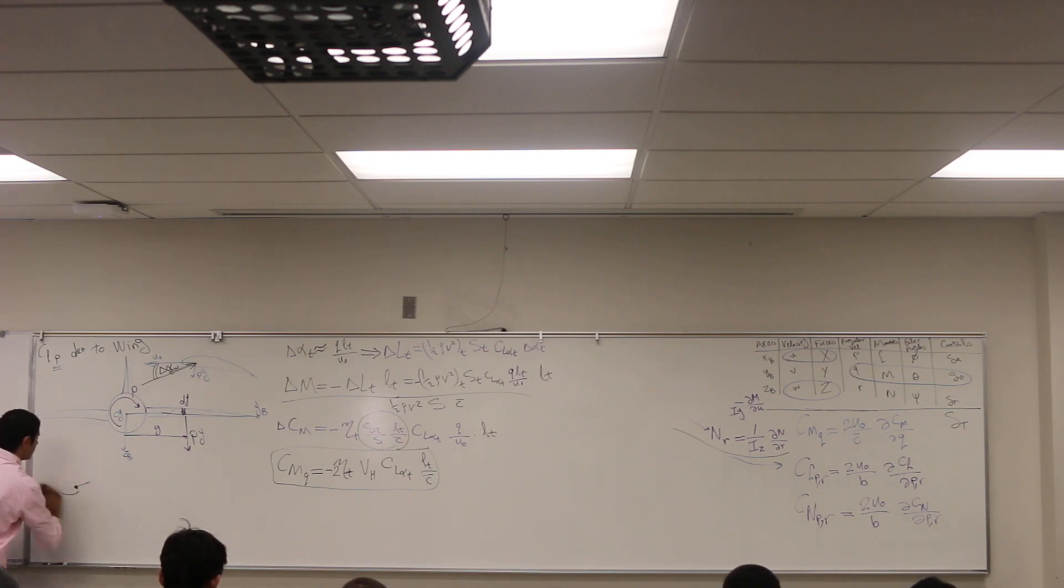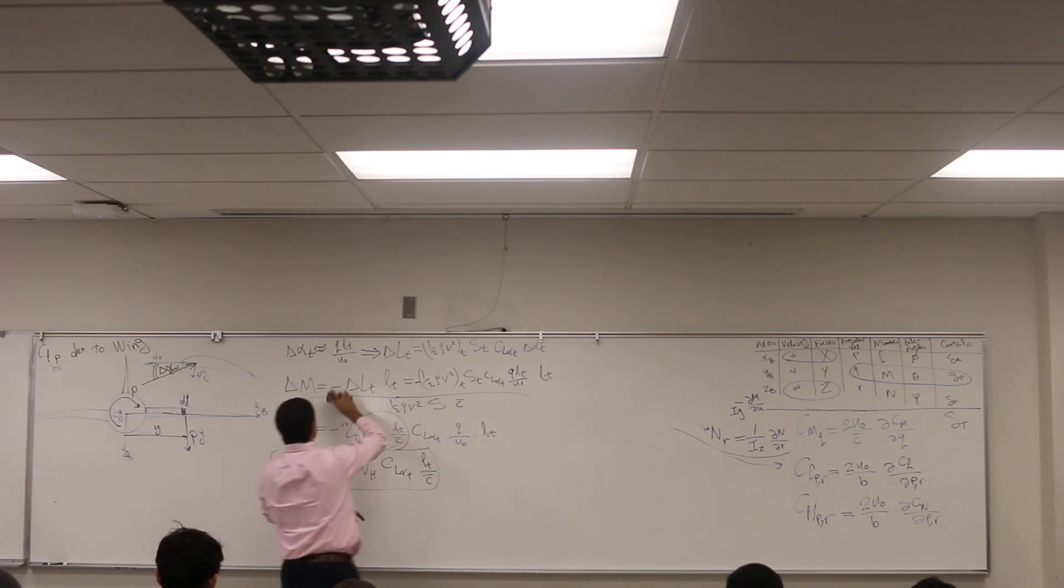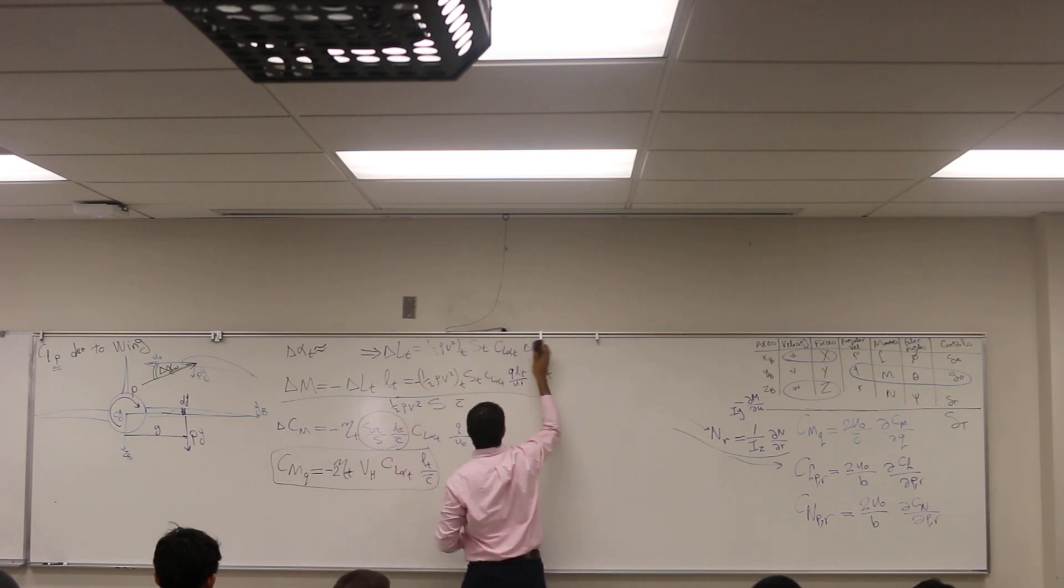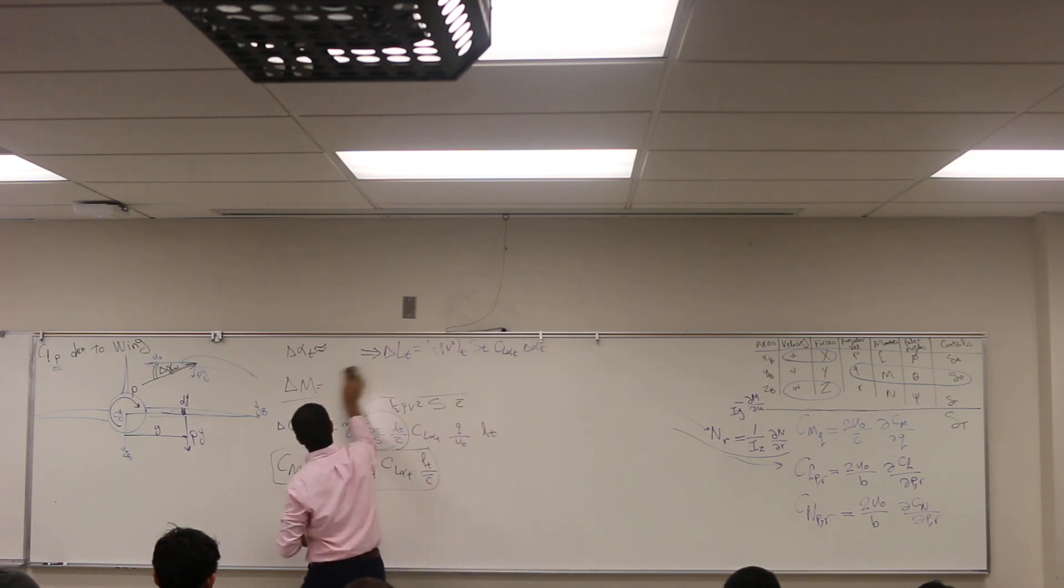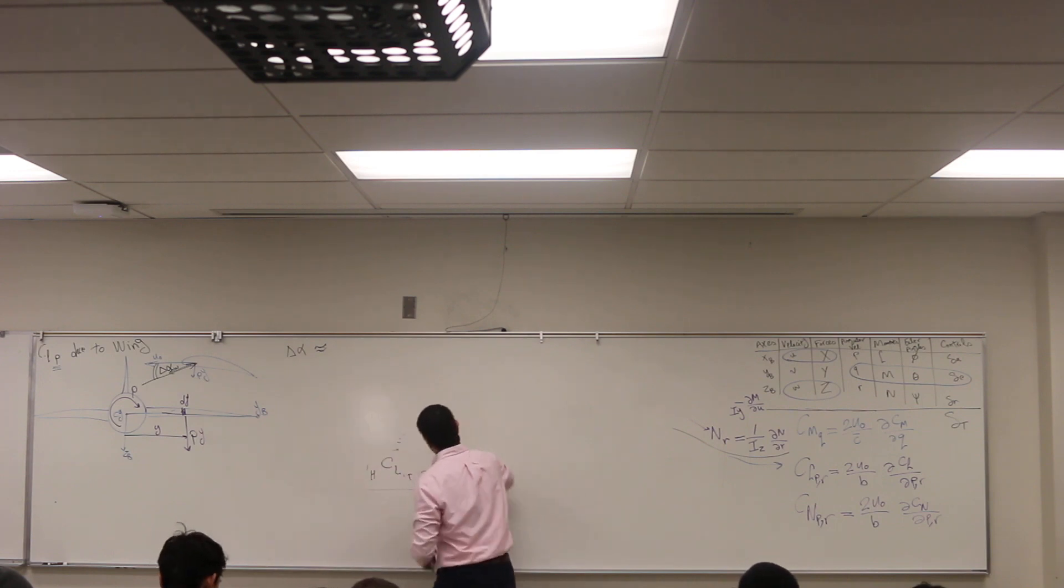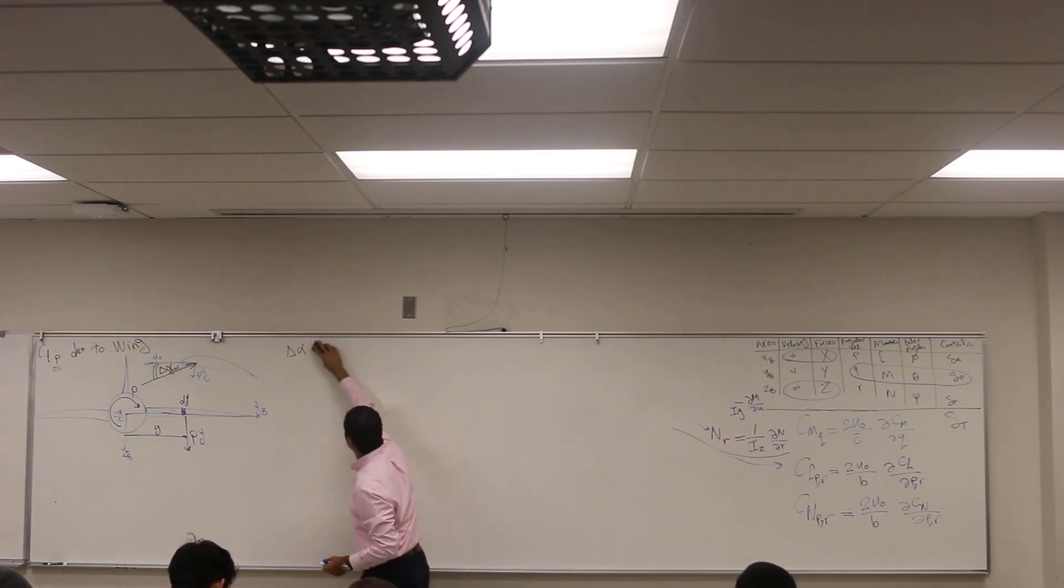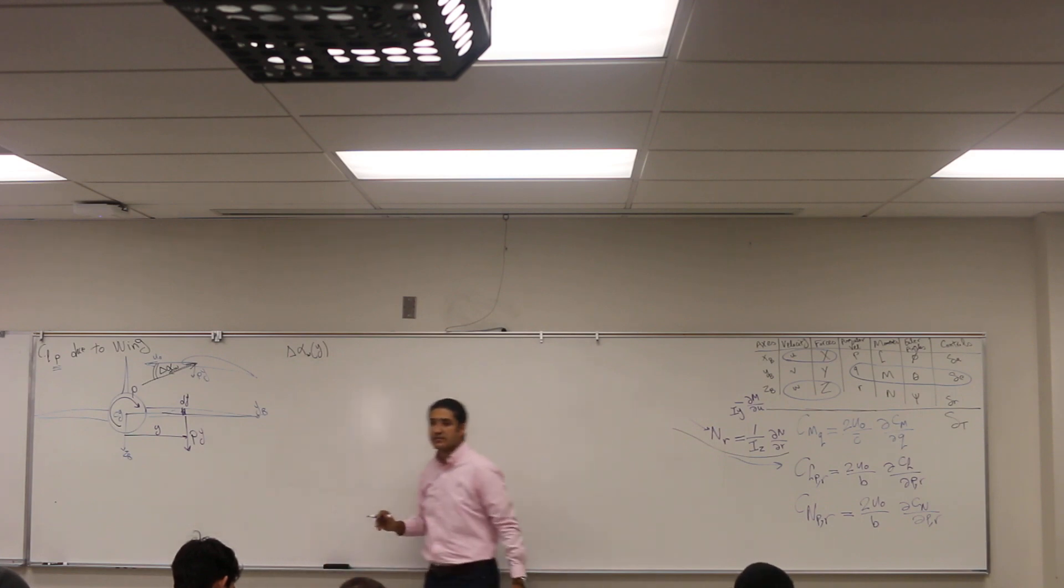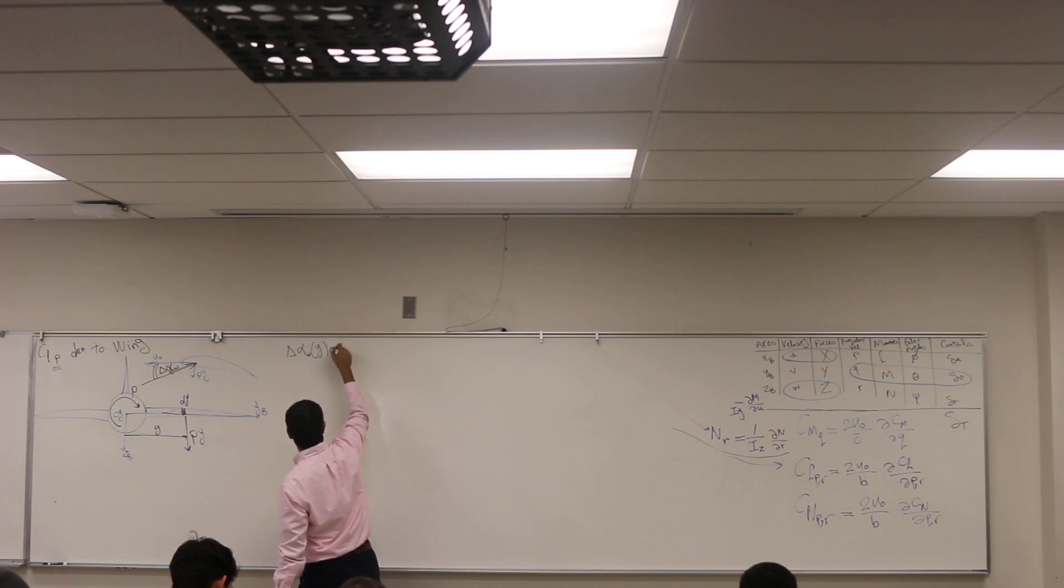So the rest is easy. So this is the change in the angle of attack of the wing, and emphasize the fact that it's at some station Y. It's not the whole wing. This is how much? Can you tell me approximately what's this? What's the change in the angle of attack of the wing? P*Y. P*Y divided by U_0.